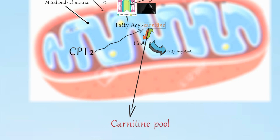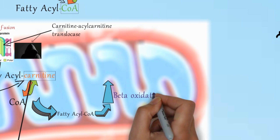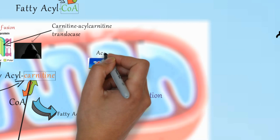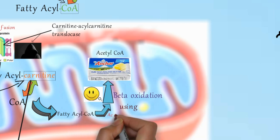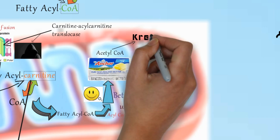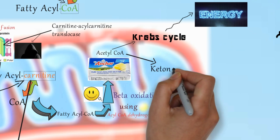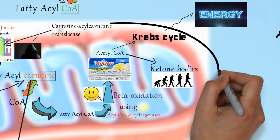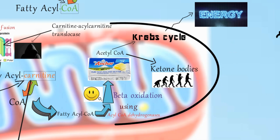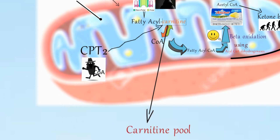Finally, fatty acyl CoA in the matrix undergoes beta oxidation to form acetyl CoA, using acyl CoA dehydrogenases. This acetyl CoA ultimately goes to the Krebs cycle to produce energy, or is converted to ketone bodies during starvation or diabetes.